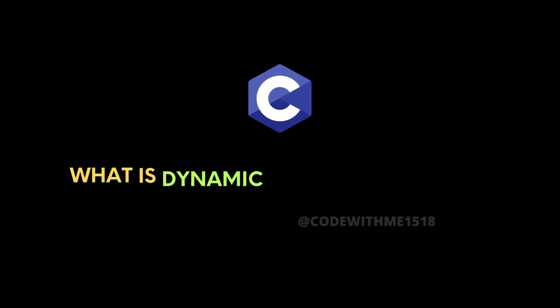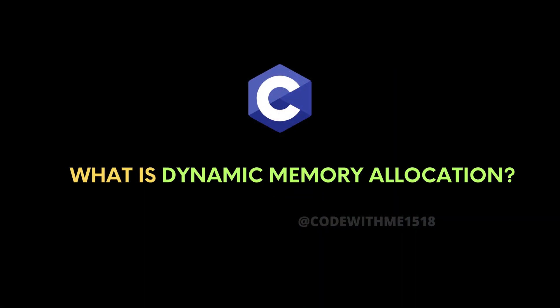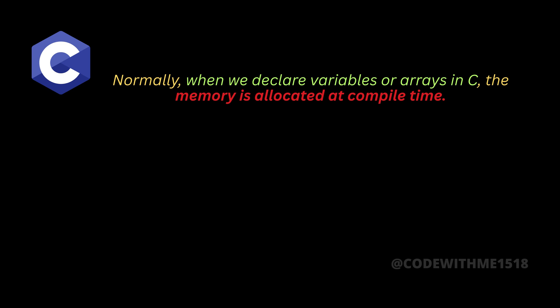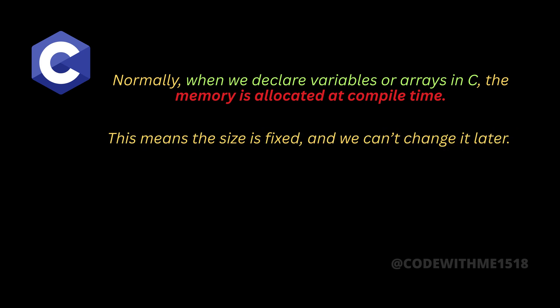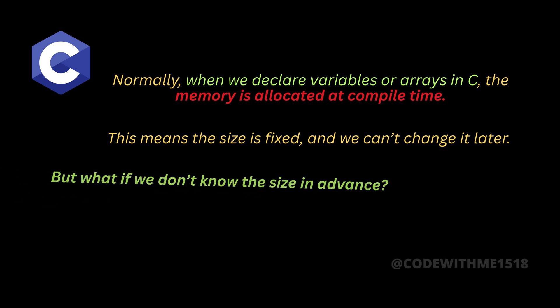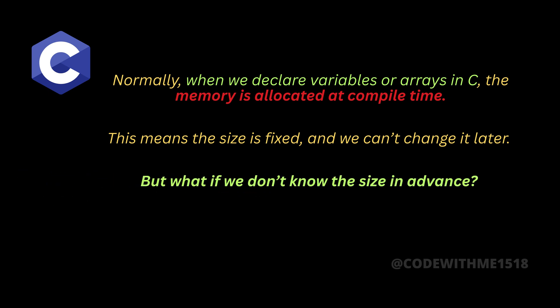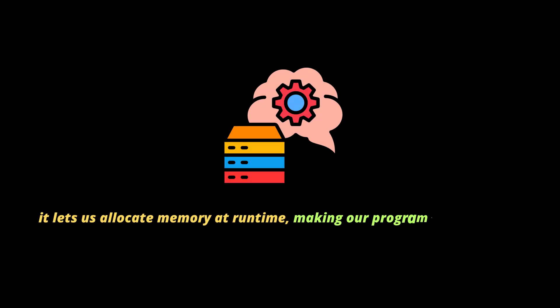Alright, let's first understand what dynamic memory allocation is. Normally, when we declare variables or arrays in C, the memory is allocated at compile time. This means the size is fixed and we can't change it later. But what if we don't know the size in advance? That's where dynamic memory allocation comes in — it lets us allocate memory at runtime, making our programs more flexible.